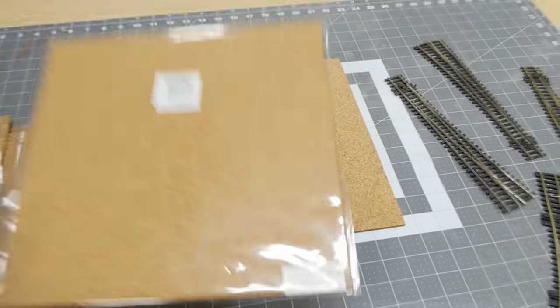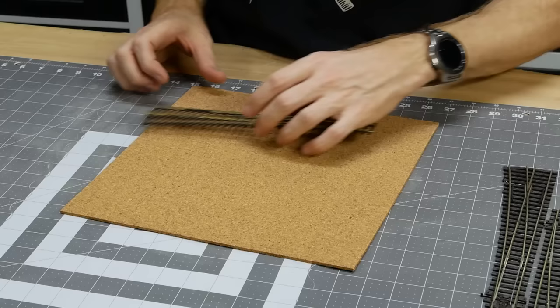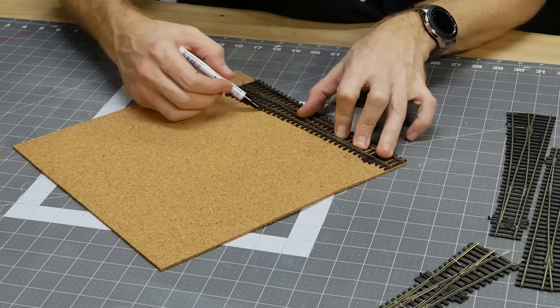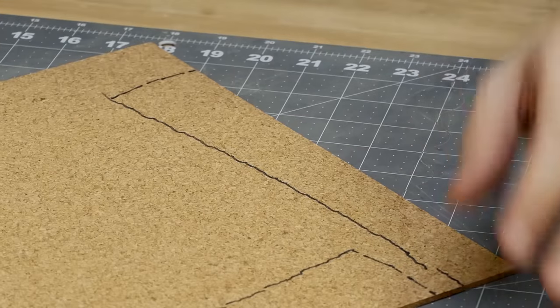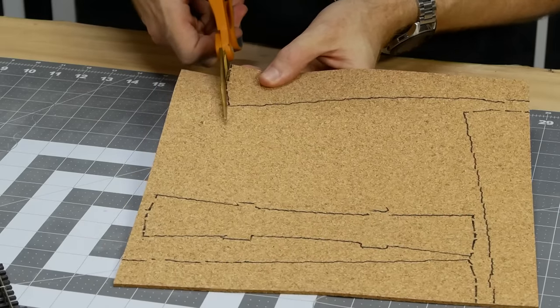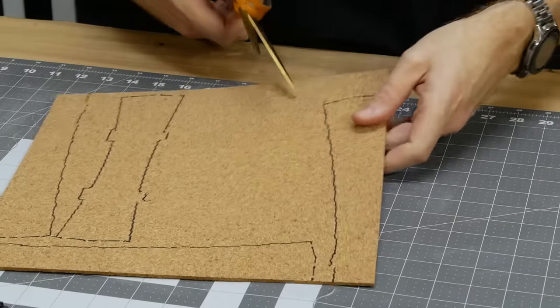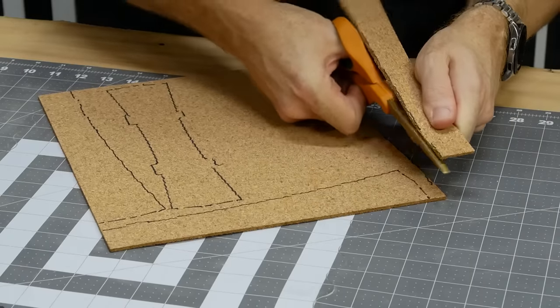Below each piece of track will be cork roadbed roughly three millimeters thick. A sheet of cork is used and each turnout is traced onto it. This lets me get the odd shape of the turnout onto the cork so that it can be cut out and fit perfectly underneath the turnout. It's only three millimeter thick cork so a standard pair of scissors should be more than enough to cut out the shape as needed.